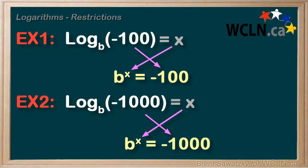And actually this one could work. Because if b was negative 10, we'd have negative 10 times negative 10 times negative 10. And that would legitimately give us negative 1000. x is 3.